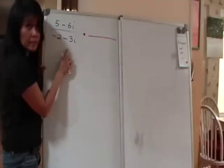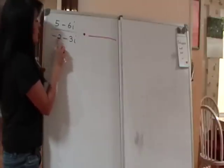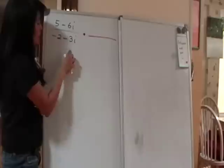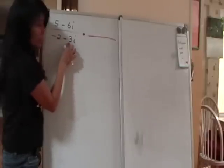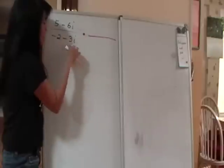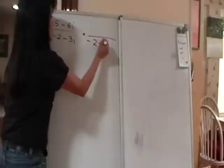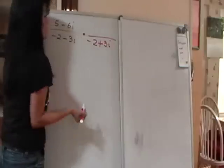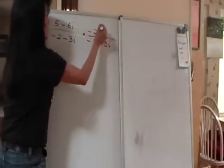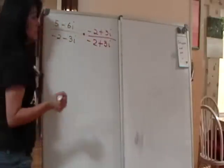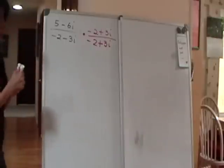This is the real part. That's the imaginary part. The imaginary part is negative 3i. So the conjugate will be, you change that negative to a positive. So your multiplier is going to be negative 2 plus 3i for both numerator and denominator.